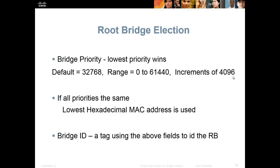The bridge ID tag has three fields: bridge priority, some VLAN information in the extended system ID, and the lowest hexadecimal MAC address that switch has. All switches send these out, then compare them. If all bridge priorities are the same, they look for the lowest MAC address. Whoever has the lowest MAC address becomes the root bridge. Make sure you're fine with this election process, because what can happen is if you buy a switch with a bridge priority already set to one, and plug it into your network, all other switches will bow down to it and elect it as the new root bridge.